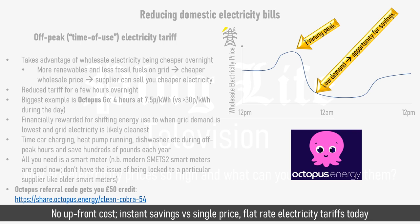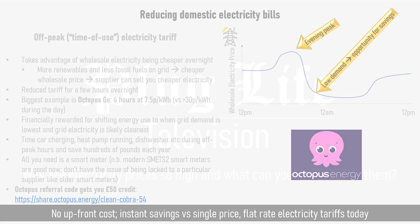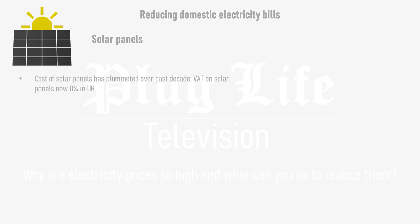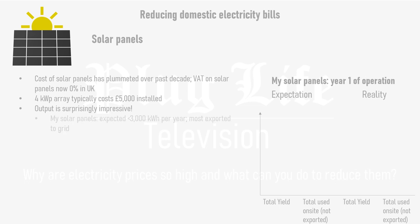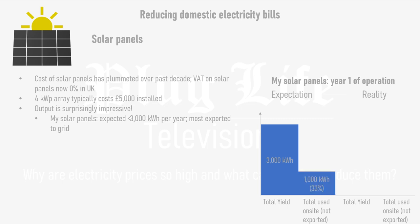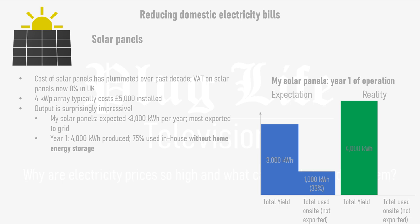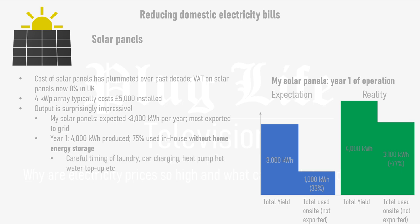Off-peak tariffs have no upfront cost and can provide instant savings versus a single-price flat-rate electricity tariff. Another option that can knock lumps off your bills is solar panels. The cost of solar panels has plummeted over the past decade and VAT on solar panels is now 0% in the UK. A 4kWp array typically costs around £5,000 installed, although that figure could potentially be less. When I got my solar panels installed, I expected them to produce 3,000 kWh in their first year, and without a household energy storage system, I expected most of that to be exported to the grid. However, my solar panels produced 4,000 kWh in their first year, and through careful timing of car charging, heat pump hot water top-ups and doing the laundry, 77% of that output was used in my house.